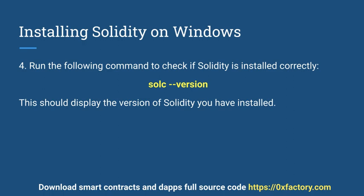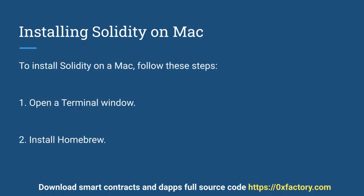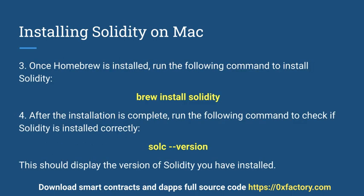This should display the version of Solidity you have installed. Installing Solidity on Mac. To install Solidity on a Mac, follow these steps. 1. Open a terminal window. 2. Install Homebrew. 3. Once Homebrew is installed, run the following command to install Solidity. 4. After the installation is complete, run the following command to check if Solidity is installed correctly.